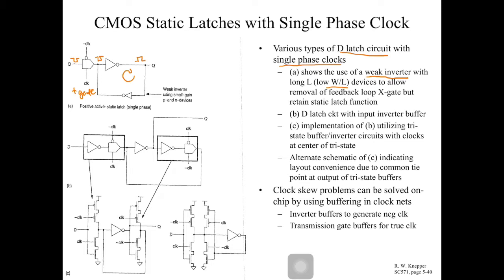In Circuit B, two transmission gate latches are connected back to back, with an inverter in between. The input zero becomes one through the first stage, and if you want the actual output you put it through another inverter, so Q will equal D.